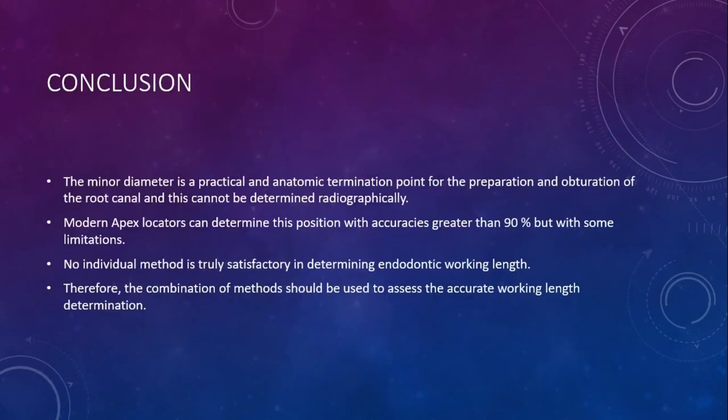In conclusion, the minor diameter is the practical and anatomic termination point for preparation and obturation of the root canal, and cannot be determined radiographically. Modern apex locators can determine this position with accuracies greater than 90%, but with some limitations. No individual method is truly satisfactory; therefore, a combination of methods should be used to assess accurate working length determination. Thank you.